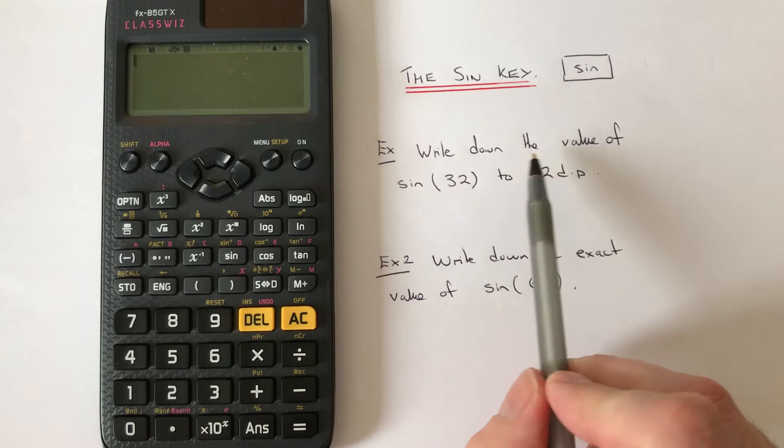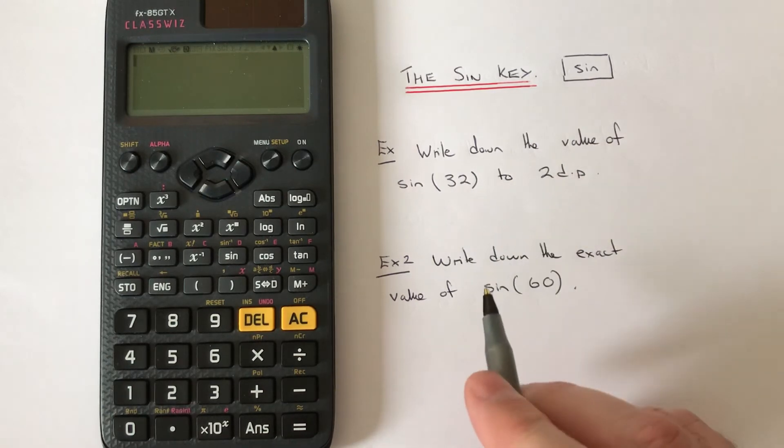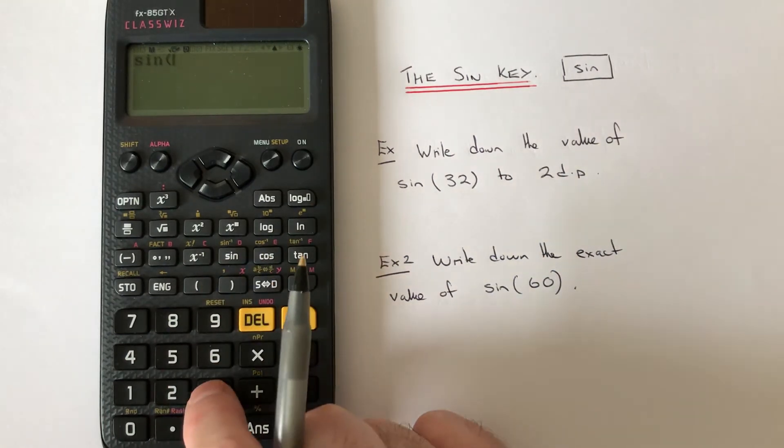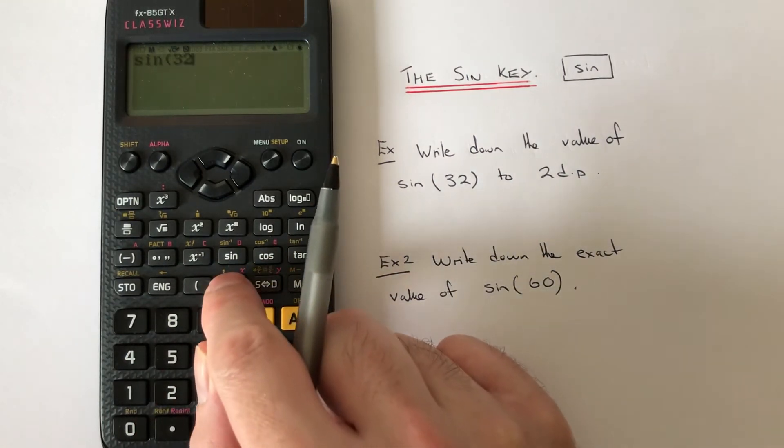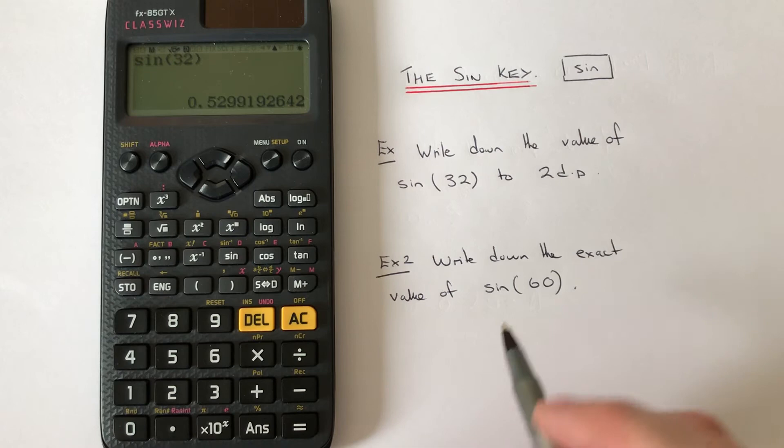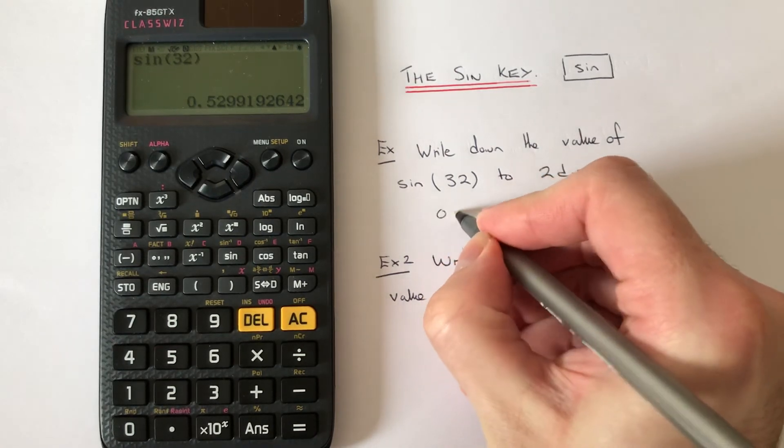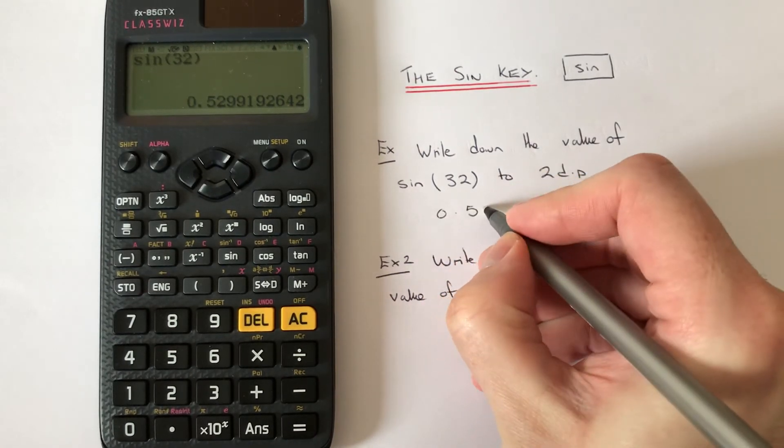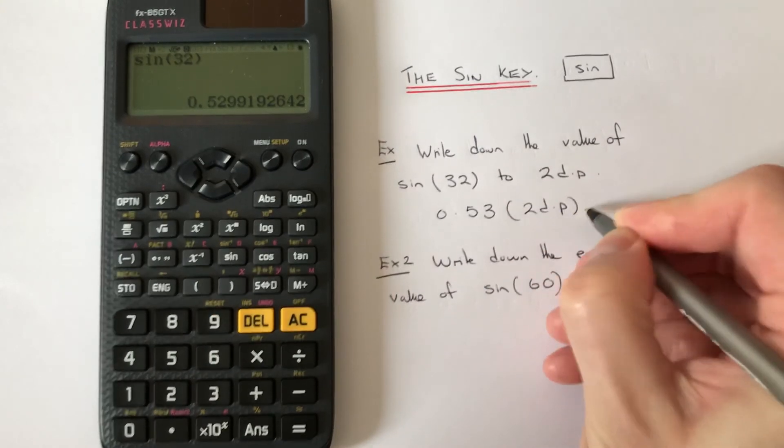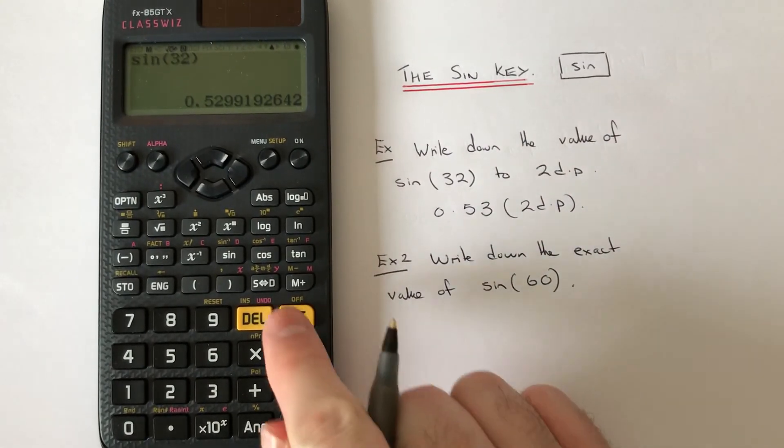I've got to write down the value of sine 32 to two decimal places. So if we press the sine key and then type in 32, and we need to close the bracket there, press the equals, and we get the answer 0.53. So that's to 2 decimal places. Okay, so let's have a look at another example then.